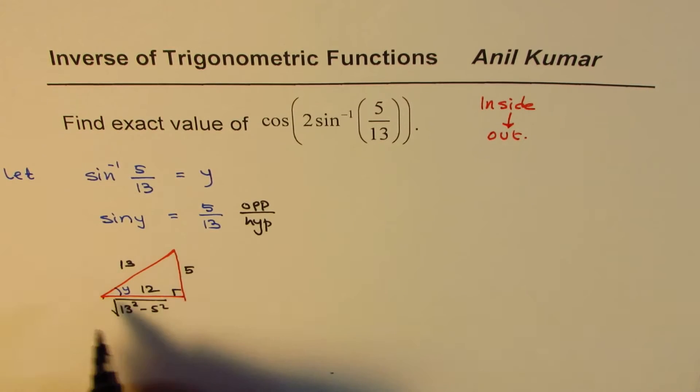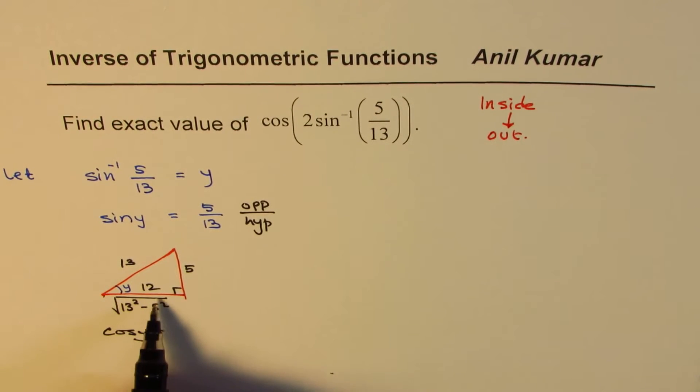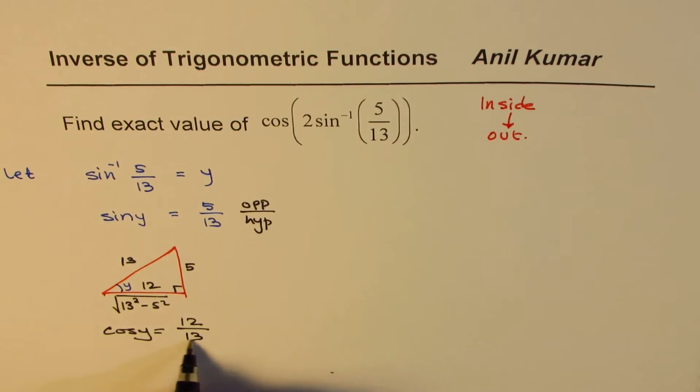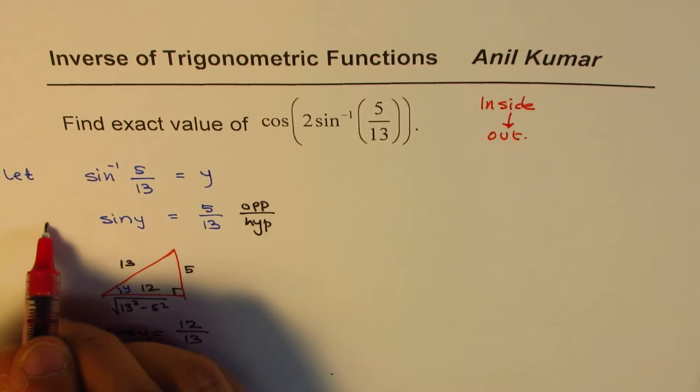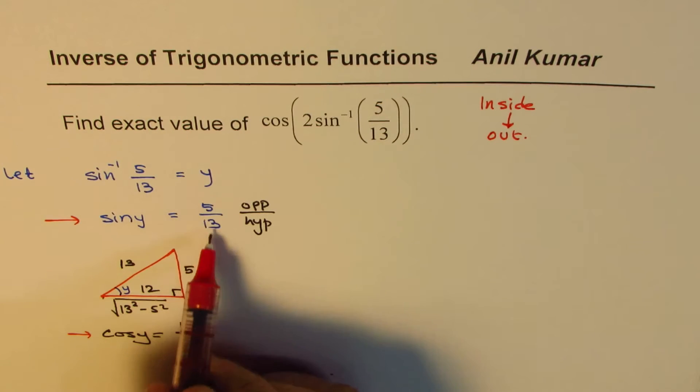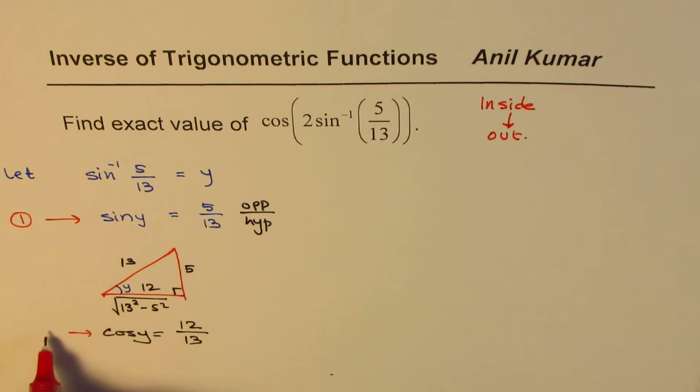So from here, what do we get? We get that sin(y) is 5/13. How about cos(y)? Cos(y) will be 12/13. So from this triangle, we get cos(y) as 12/13. So we have two results here. 1 is sin(y) equals 5/13 and cos(y) is 12/13. Let me number them, 1 and 2.